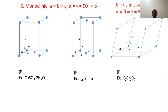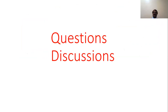In triclinic, all sides are different and all angles are different from each other and other than 90 degrees — very low symmetry. Only one single type is possible, and the example is K2Cr2O7. With this, the topic is open for discussion.